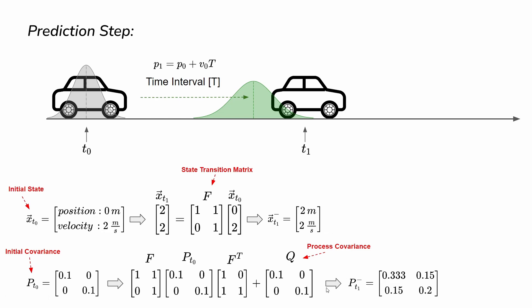In the predicted covariance, you can see that because of the correlation in the F matrix — specifically the relationship between position and velocity expressed by the off-diagonal element — this multiplication results in non-zero values in the off-diagonal entries. This means the predicted covariance now has a correlation between position and velocity as well.